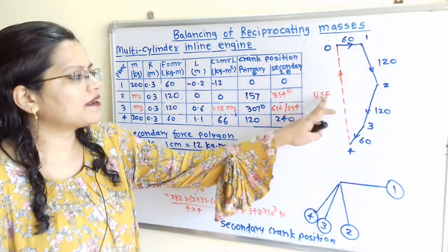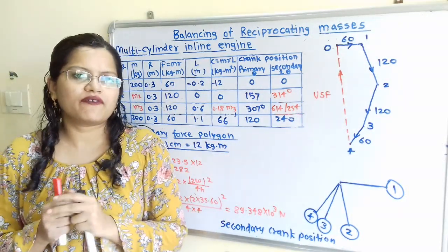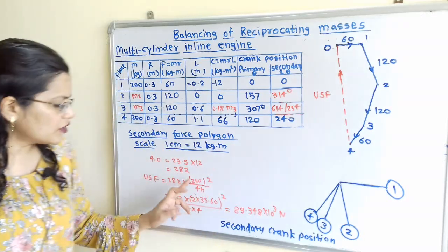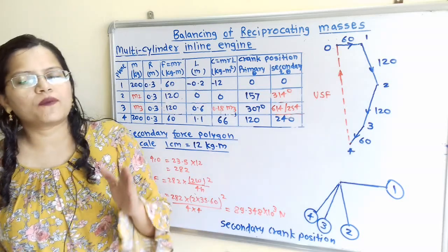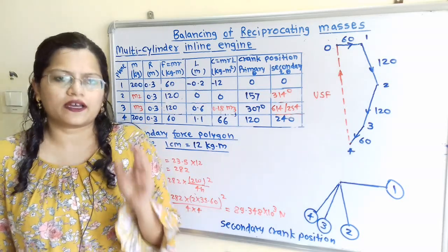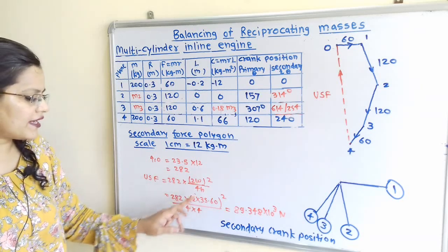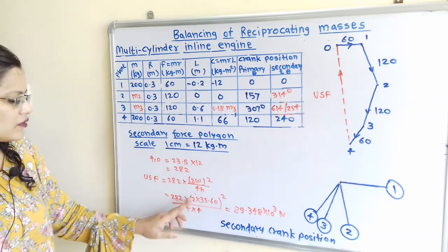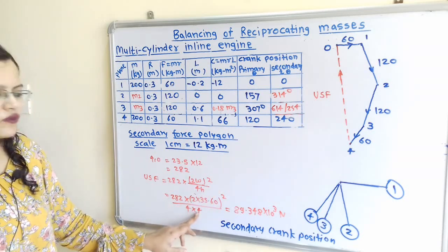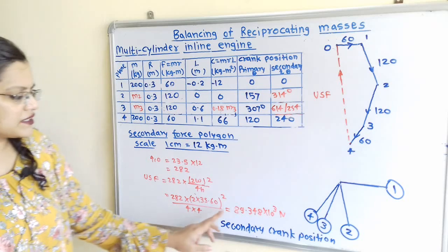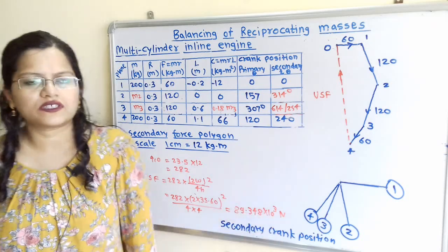To calculate the unbalanced secondary force, we multiply by the factor ω²/(N), specifically: 282 × 2 × (35.60)² / (4 × 4). Solving this gives the unbalanced secondary force equal to 89,348 N, or approximately 89.348 × 10³ N.